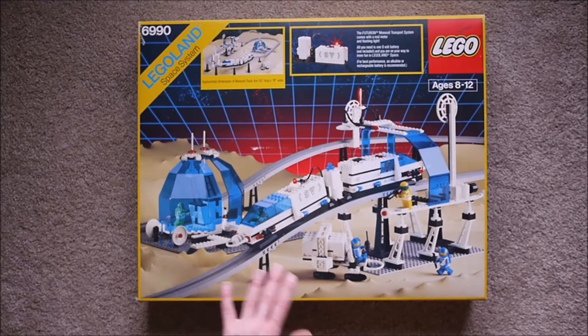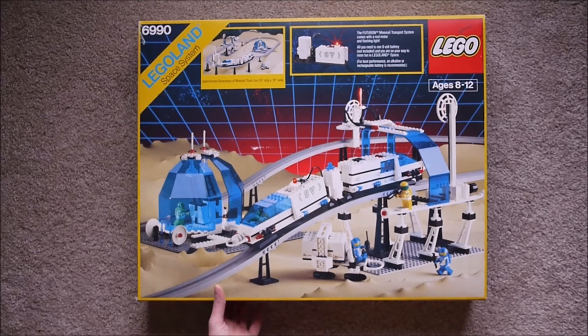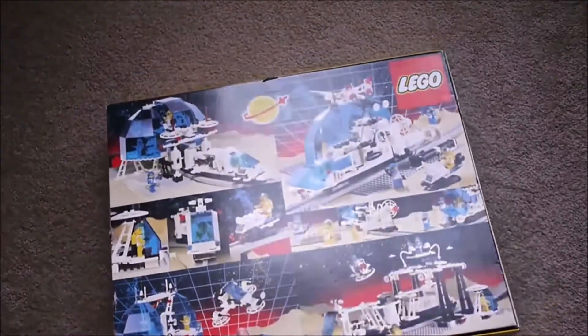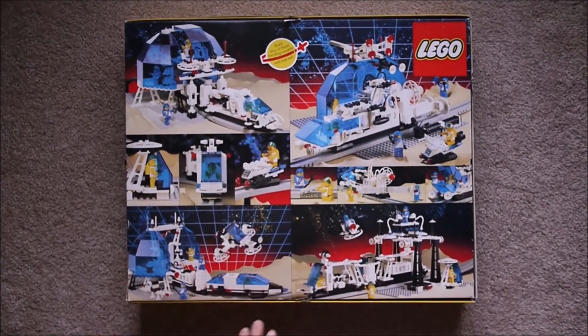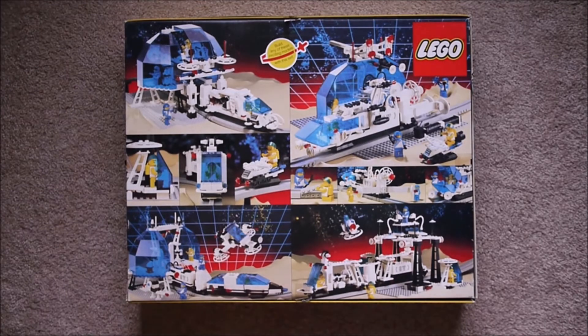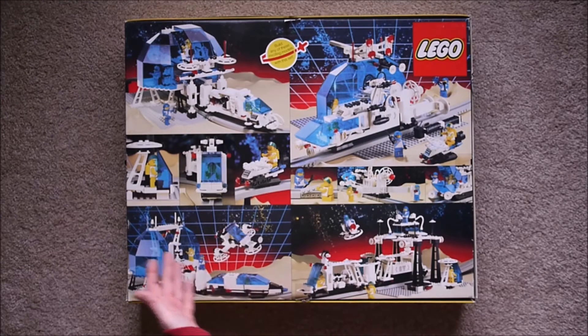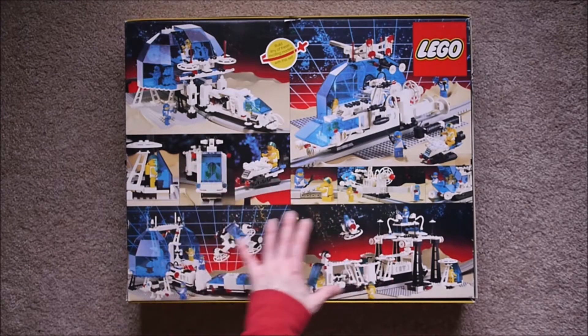I think they're supposed to be on the moon. So let me flip it over. The back just shows other things you can build. Of course, the manual only shows you how to build the main set, and then just use your imagination to come up with things like this.